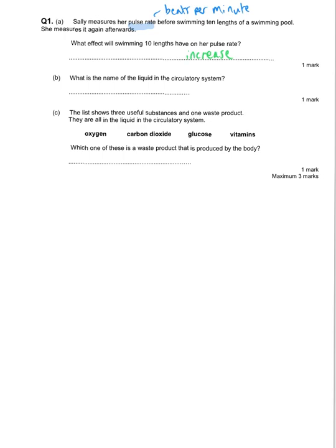What is the name of the liquid in the circulatory system that is being pumped around by the heart? That is the blood. The list shows three useful substances and one waste product, and the waste product produced by the body is carbon dioxide.